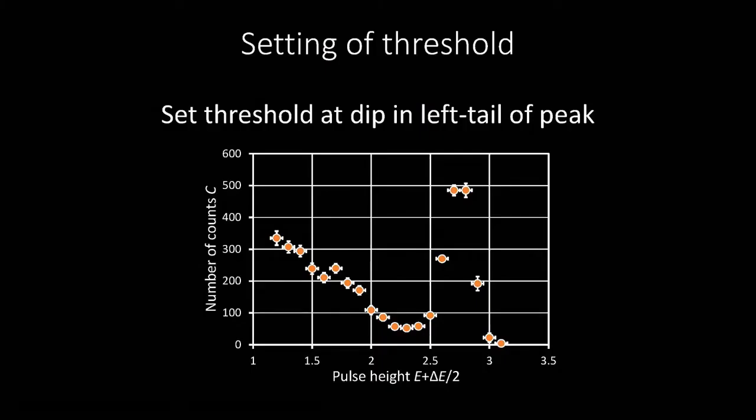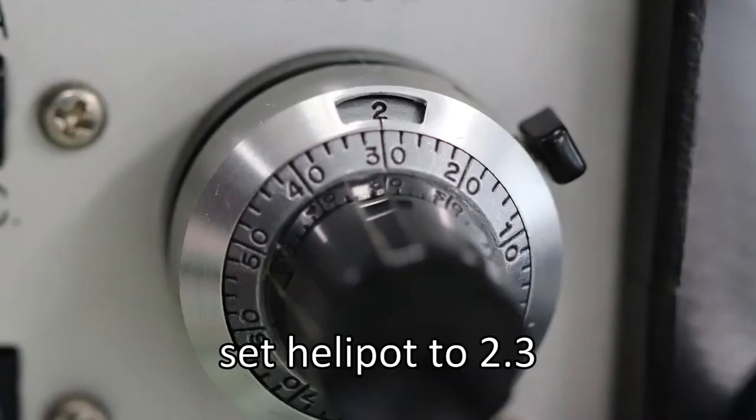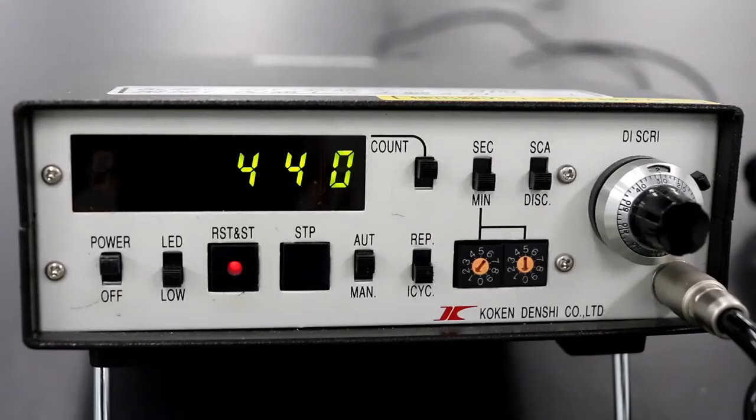Set the threshold value to the value of the valley in the graph drawn in the energy spectrum measurement. In this example, the value is 2.3. So we set the helipod of the discrete to that value. After 10 minutes of measurement, record the measured background counts.